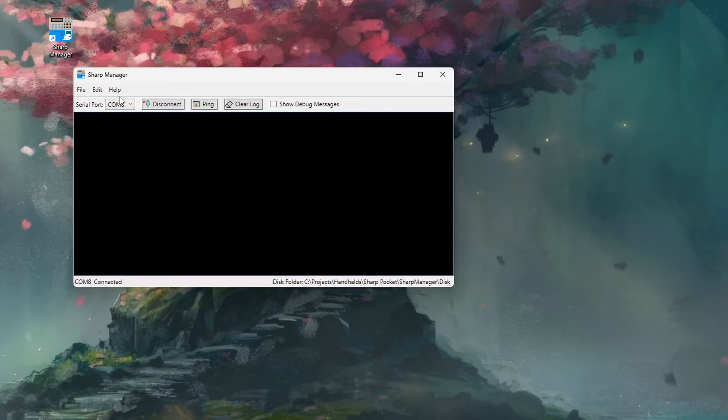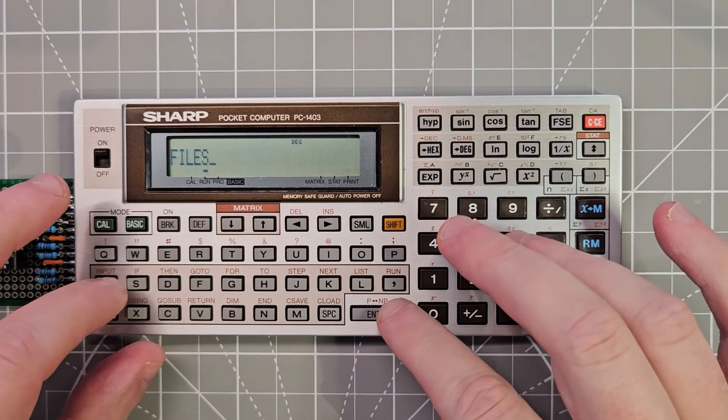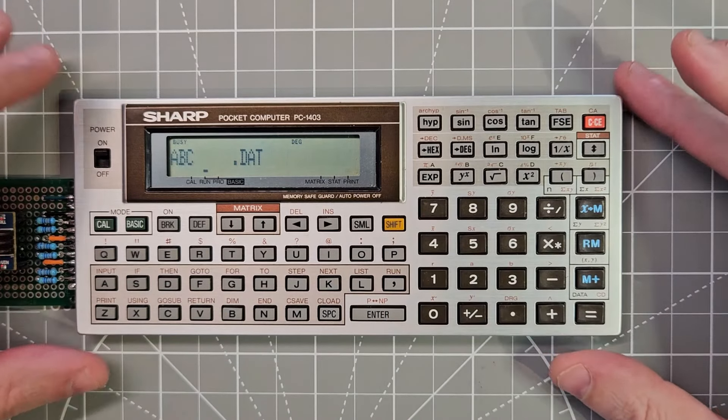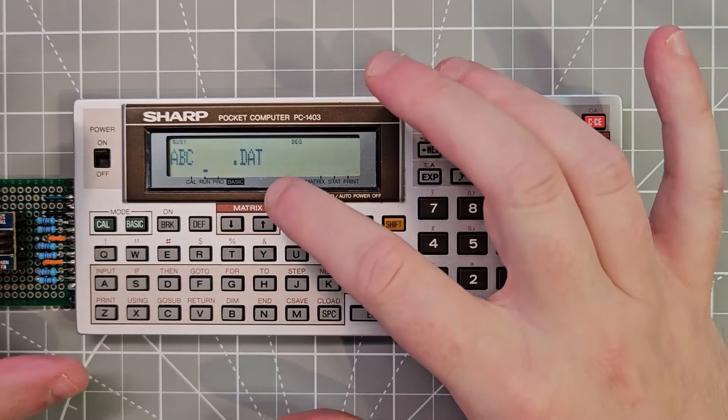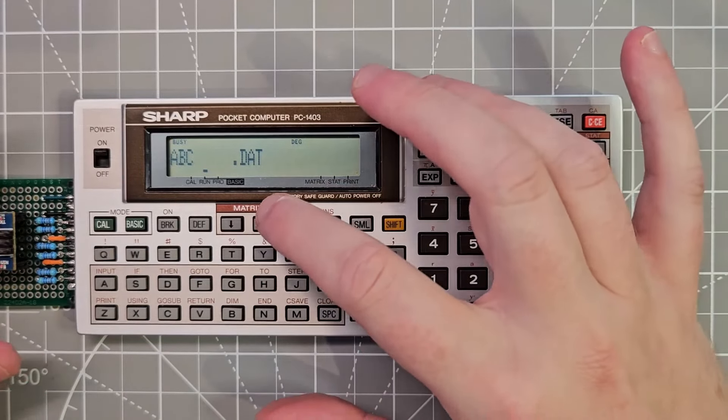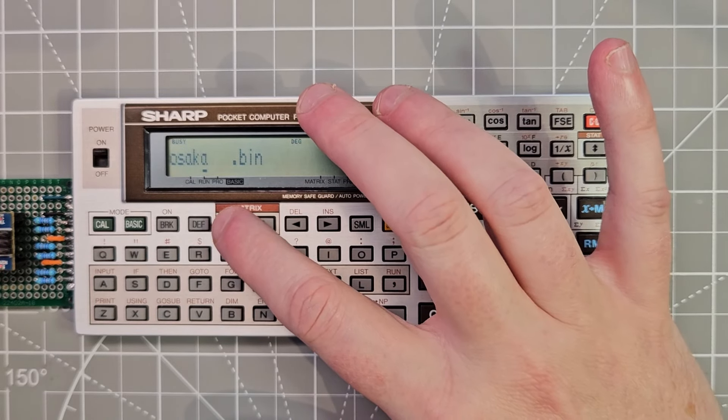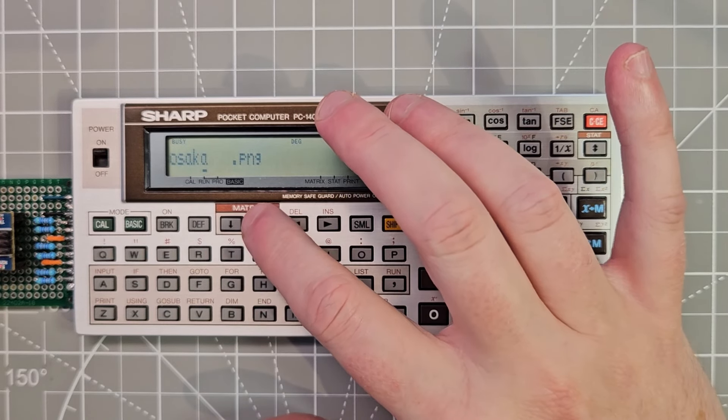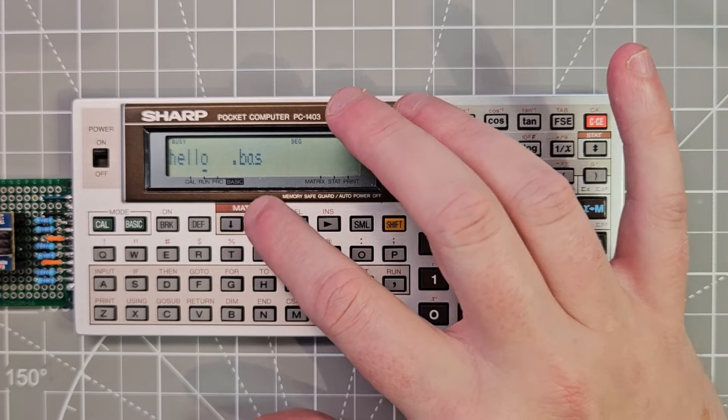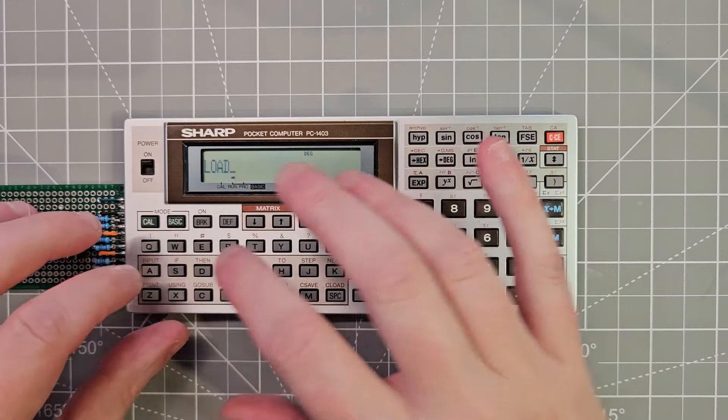So what we can do is we can start executing disk commands. Type in files and get a listing of the files that are stored in that folder. And we can go up and down. So we can see we have hello BAS, we have IO BAS, we have some binary files in there.